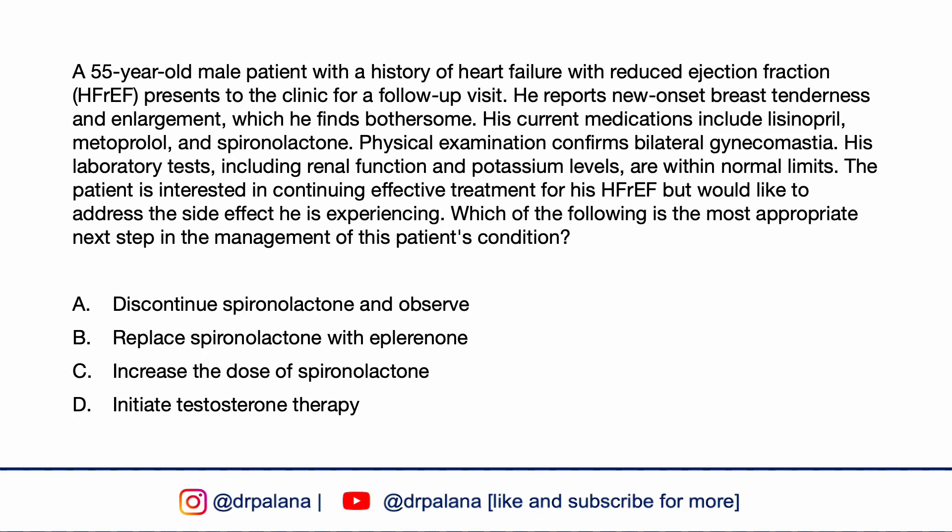A 55-year-old male with HFrEF presents for follow-up reporting new onset breast tenderness and enlargement. His current medications include lisinopril, metoprolol, and spironolactone. Physical examination confirms bilateral gynecomastia. Lab findings including renal function and potassium levels are within normal limits. The patient wishes to continue effective treatment for HFrEF but wants to address the side effect. Which is the most appropriate next step: discontinue spironolactone and observe, replace with eplerenone, increase the dose of spironolactone, or initiate testosterone therapy?